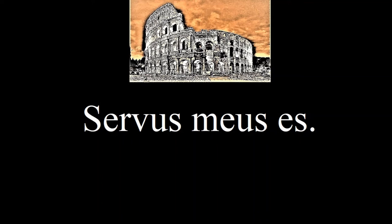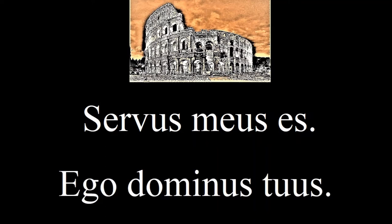Do you remember the second word in this sentence? 'Servus meus es.' From the word 'servus,' we derive the word servant. But in Latin, it can also have the meaning of slave. So this sentence means 'you are my slave' — kind of scary. And there's also a poem by William Butler Yeats titled 'Ego Dominus Tuus,' meaning 'I am your lord' or 'I am your master.'